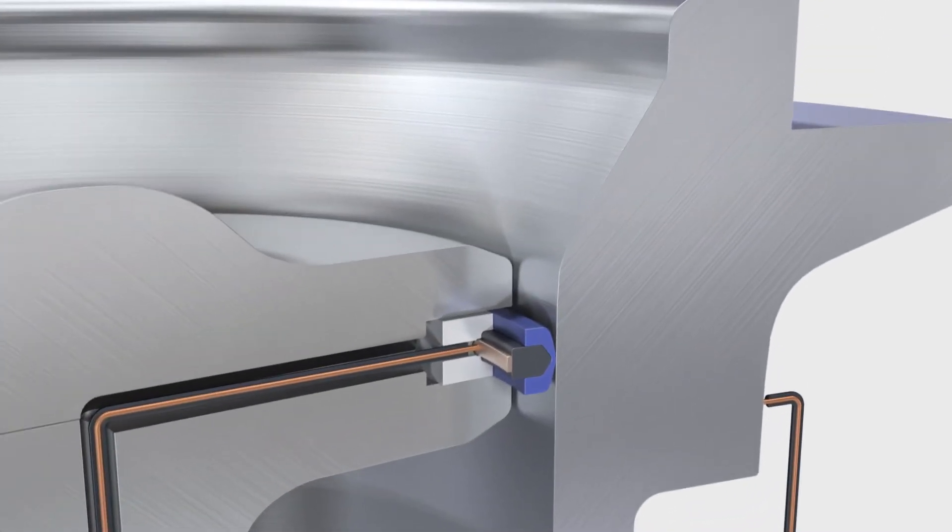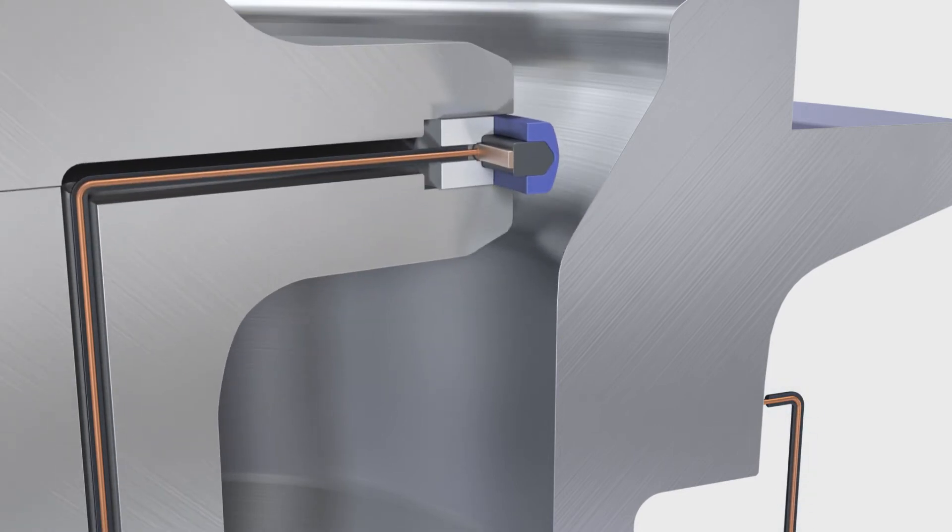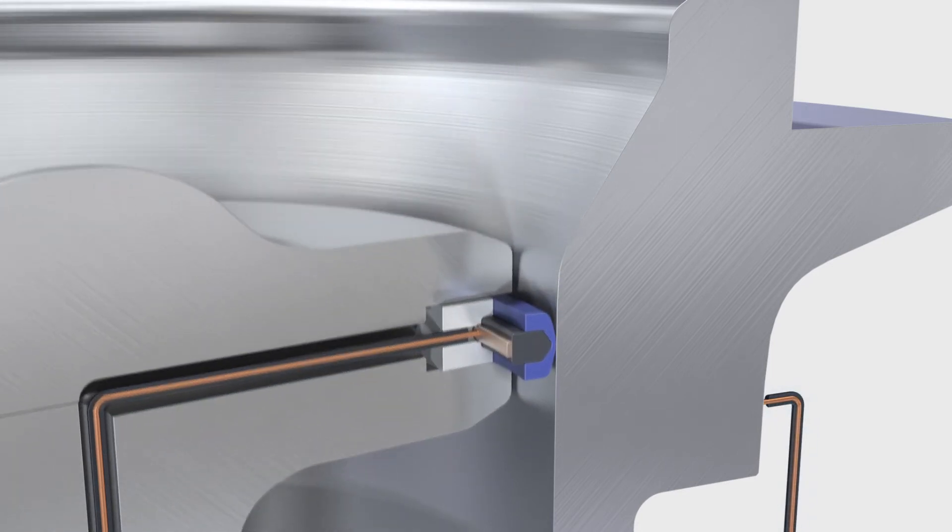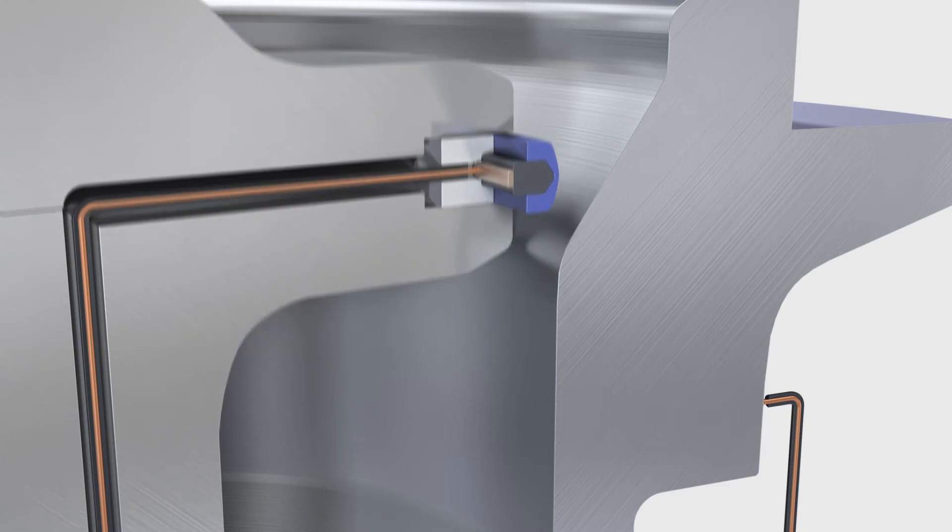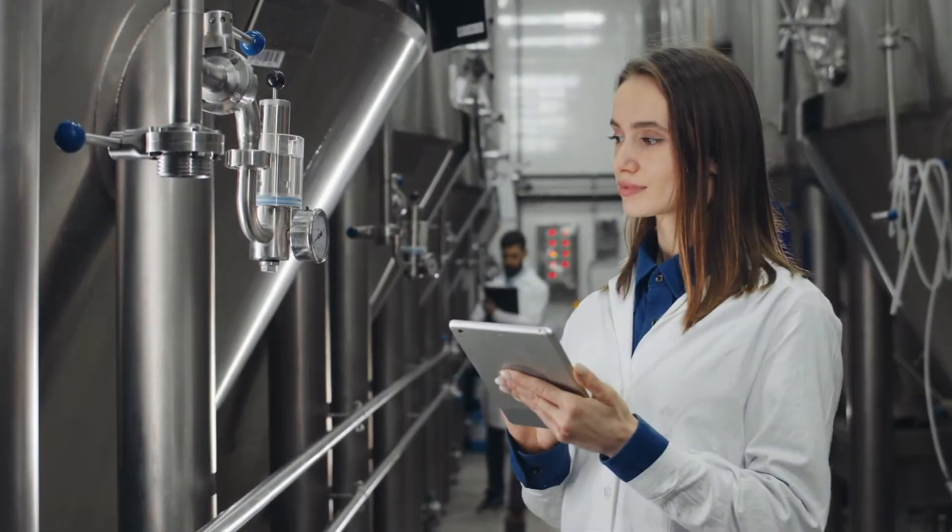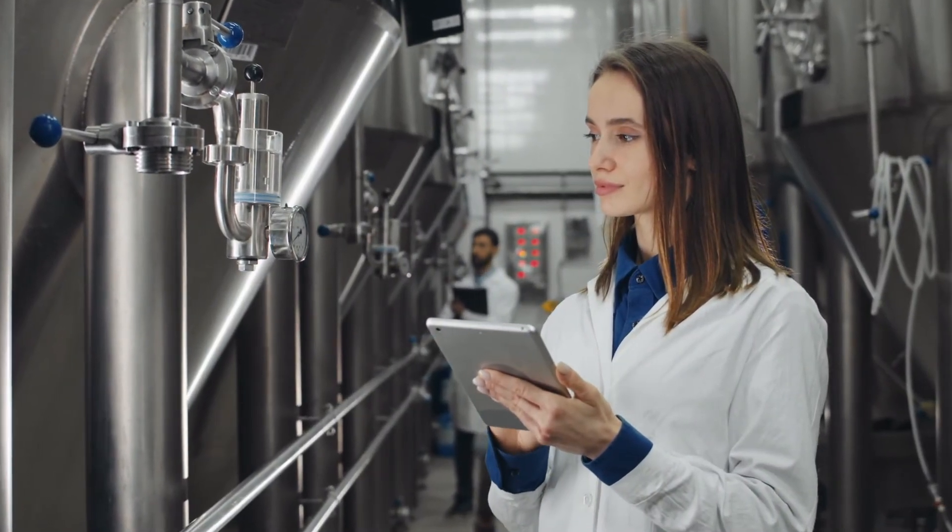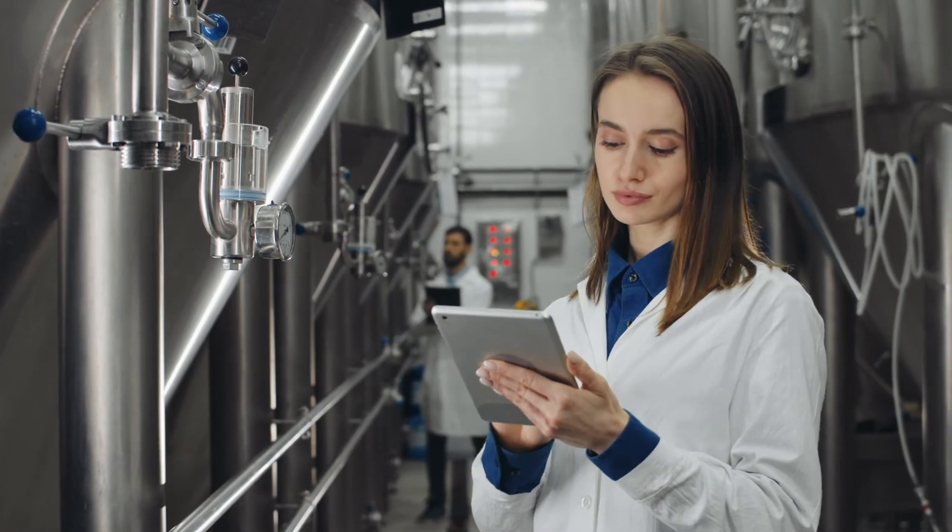With Freudenberg Smart Seal, a seal continuously displays its degree of wear. The information can be linked to system data, enabling the creation of a digital twin.